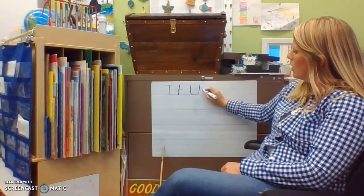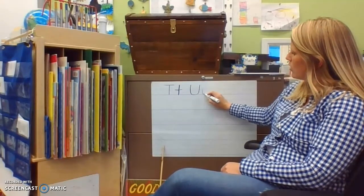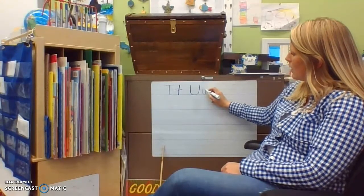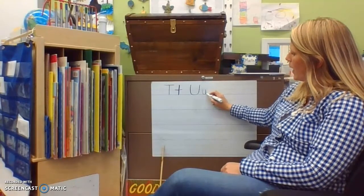For my little U, I do a straight line down, curve around, up to the top, and then I follow my line back down.